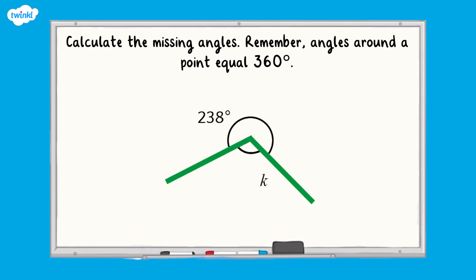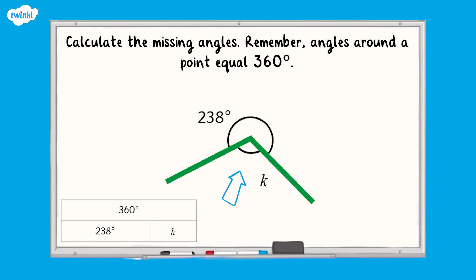In these examples we are again going to use a bar model to help us with our calculations. To calculate the missing angle K, we need to use the fact that angles around a point equal 360 degrees. 360 degrees subtract 238 degrees is equal to 122 degrees. Angle K is 122 degrees.